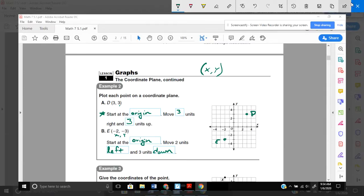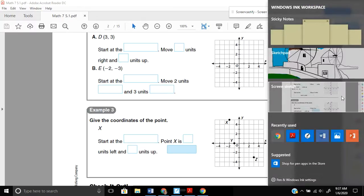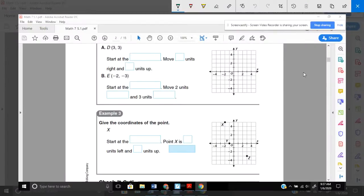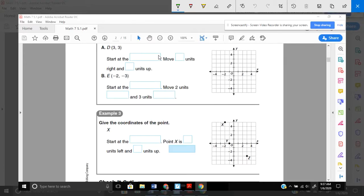Hopefully it's starting to catch on a little bit. Moving on to the last example of the day. It says give the coordinates of the point. And it wants us to look at point X. Let's try that. Looking at point X, it's right here. Remember, start at the origin.